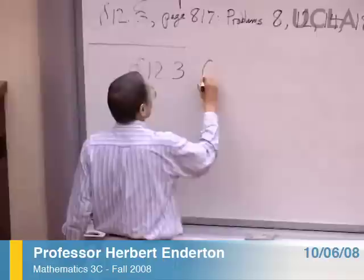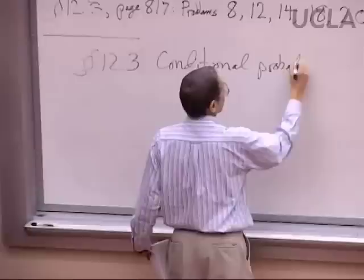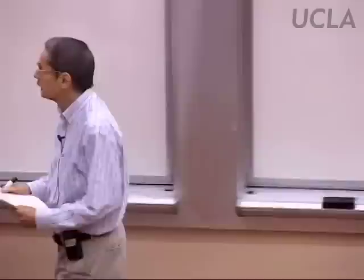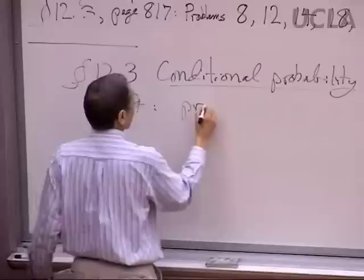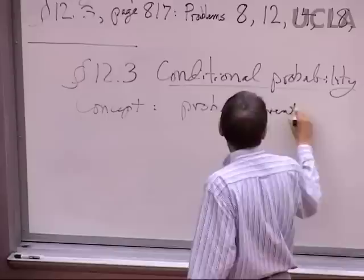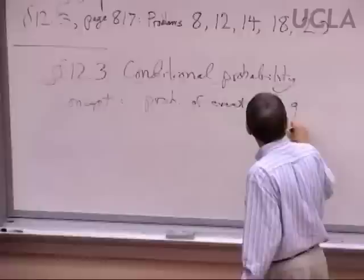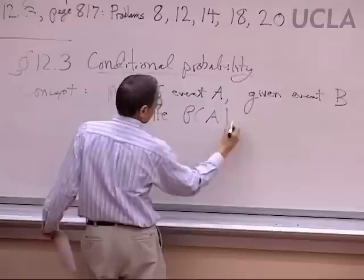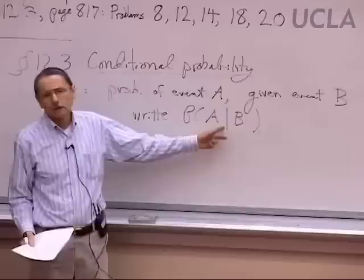A new topic — it's still probability. I want to talk about conditional probability. The name doesn't give much of a clue, but here's the concept: for a couple of events, say A and B, we want to talk about the probability of event A, but given the extra information that event B occurs. This is written as the probability of event A given B, with a horizontal line like this.